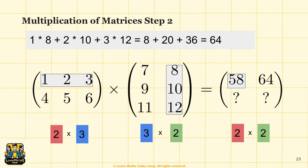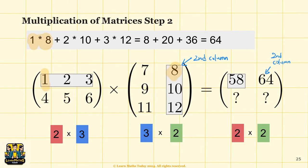Now that you have computed the first entry, let's move on to the next one. You are now filling the second column of the resulting matrix, so you move to the second column of matrix B: 8, 10, 12. Using the same first row of matrix A — 1, 2, 3 — you compute 1×8 + 2×10 + 3×12 = 64, which goes in the first row, second column of the new matrix.